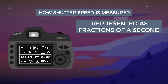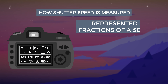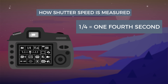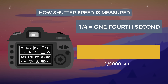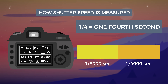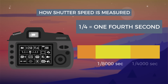Shutter speeds are measured in fractions of a second when under one second. For example, 1/4 displayed on the camera means the shutter speed is one-fourth of a second, whereas 1/250 means the shutter speed is one-two-hundred-fiftieth of a second. Most cameras can handle shutter speeds as fast as 1/4000th of a second, or sometimes even as high as 1/8000th of a second, and shutter speeds as long as 30 seconds.